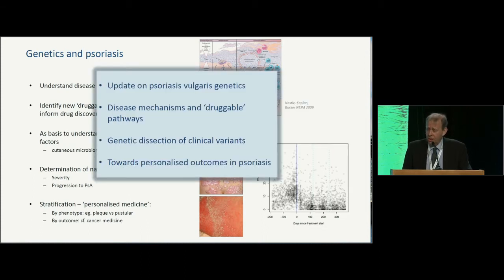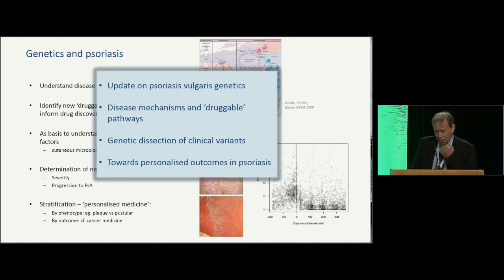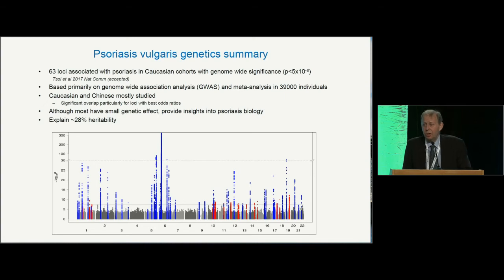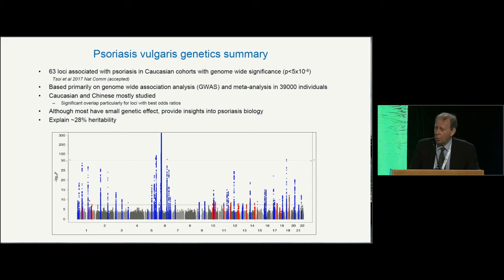I'm not going to be able to go through all of these today, but I'll do an update on where we are: a little about disease mechanisms, genetic dissection of clinical variants, and a bit about what we're doing in the UK relating to the SORT program coordinated by Chris Griffiths. I'm very grateful to Alex Soy from Michigan for allowing me to share some of his data, which has just been accepted by Nature Communications. Currently, with respect to Caucasian psoriasis, there are 63 loci statistically significantly associated with psoriasis.